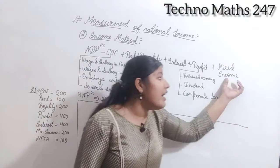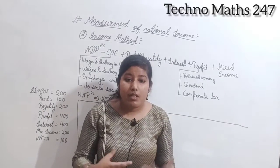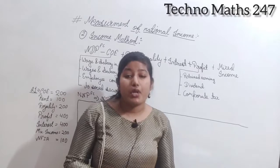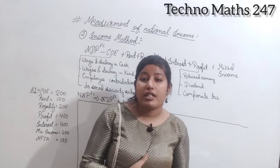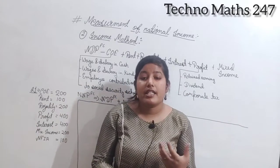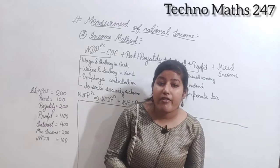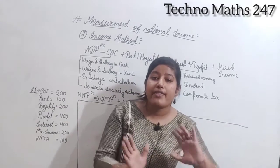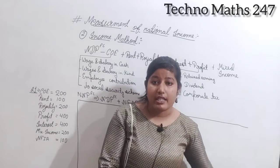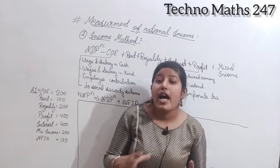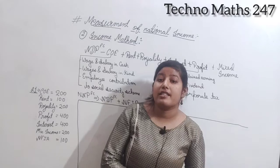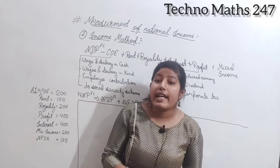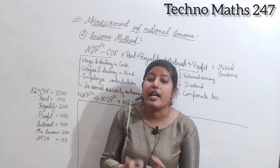Then comes mixed income. Mixed income is the income earned by small workers — for example, vegetable sellers, fruit sellers. The income they earn comes under mixed income. So this is the formula of the income method, by which we find out NDPFC.